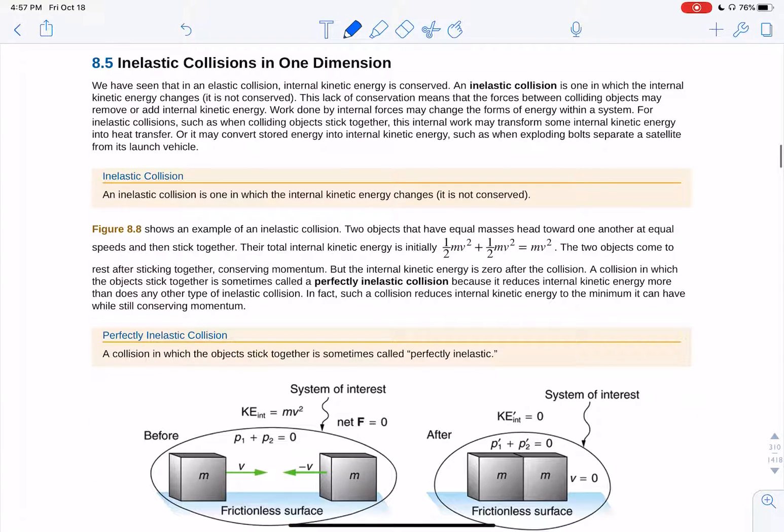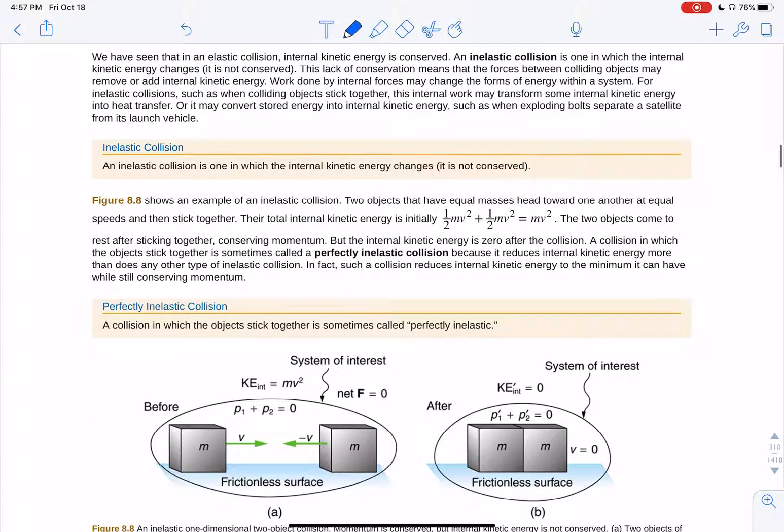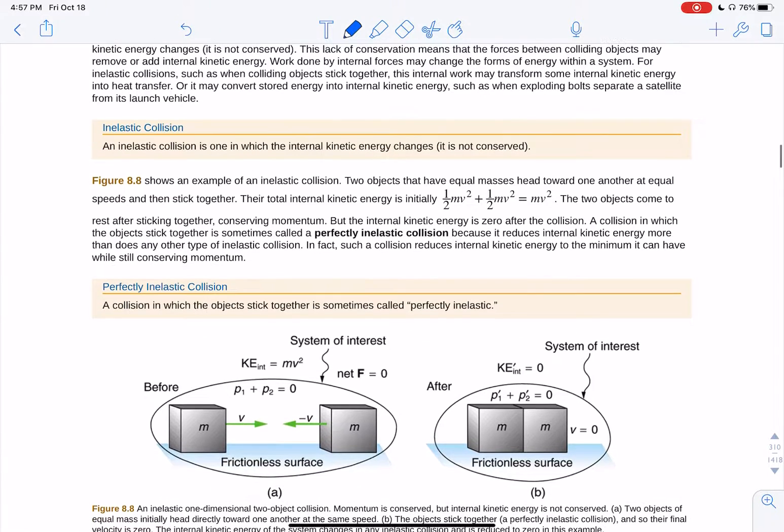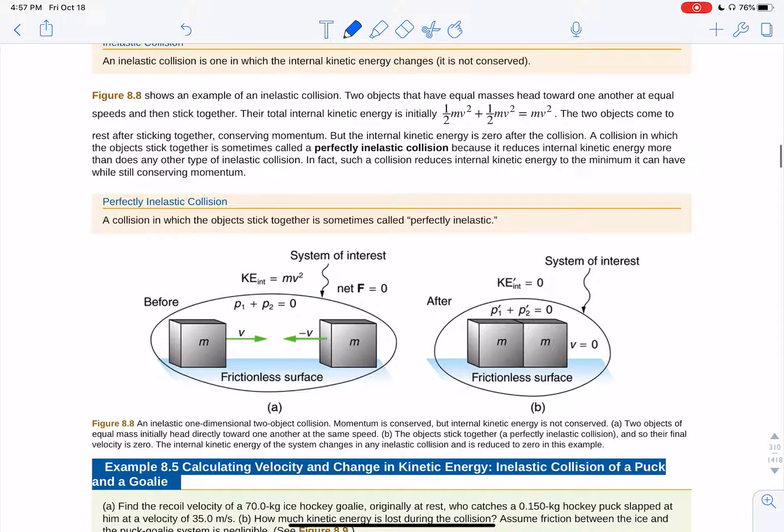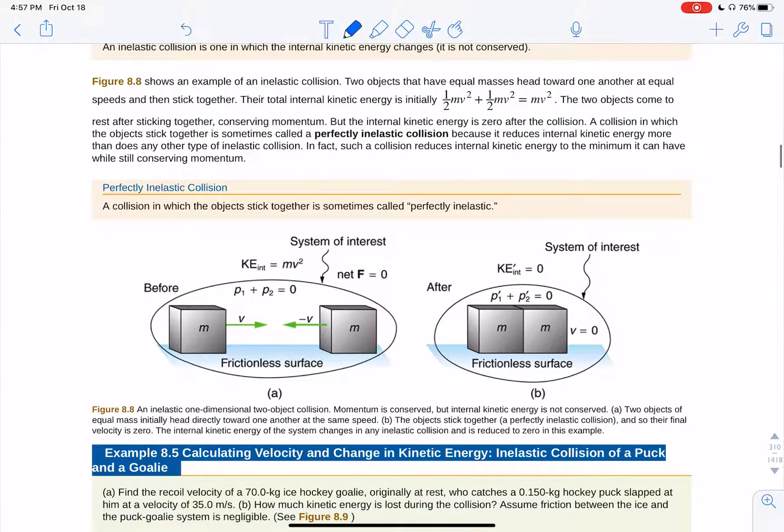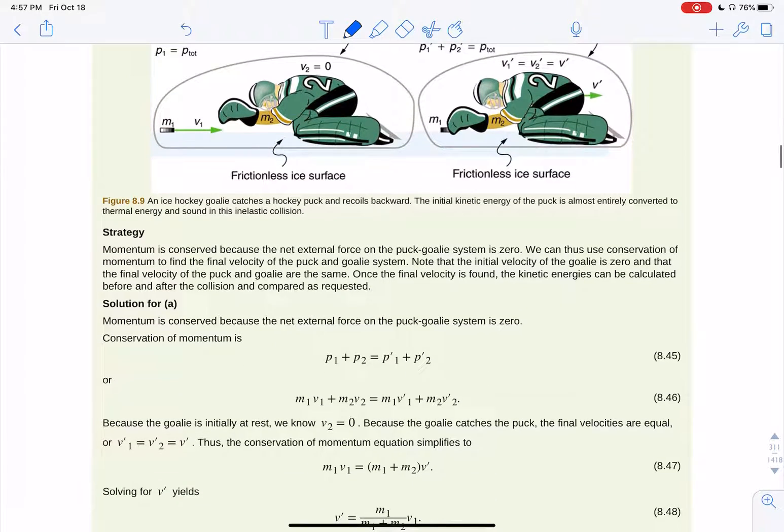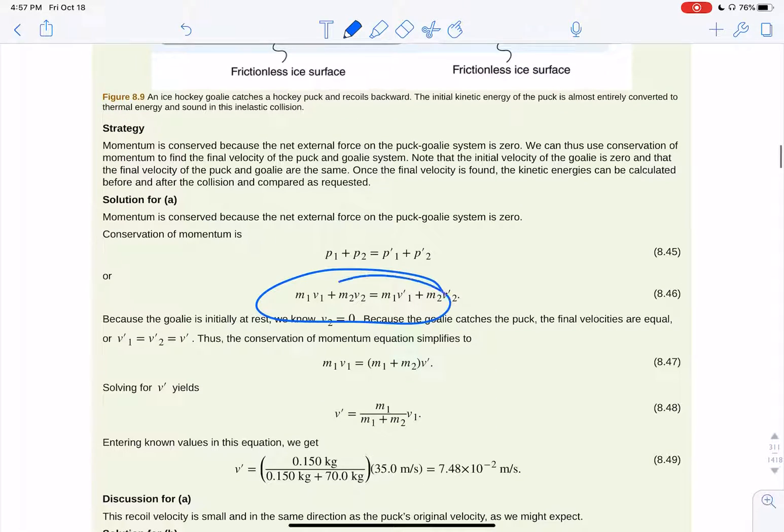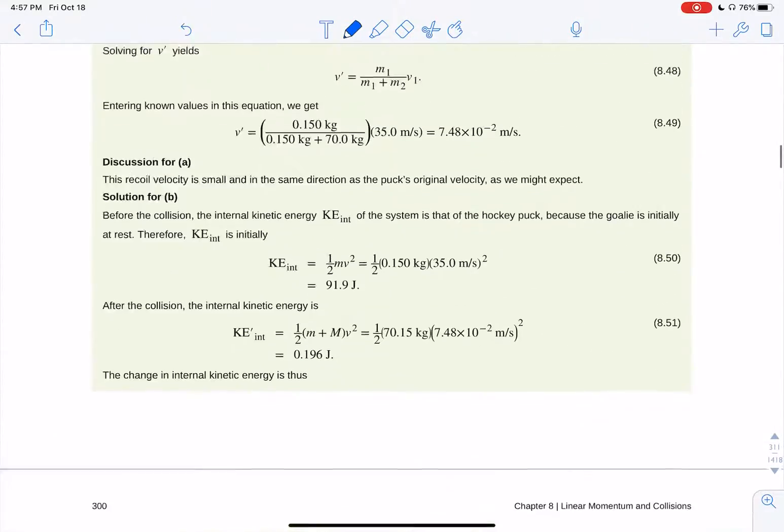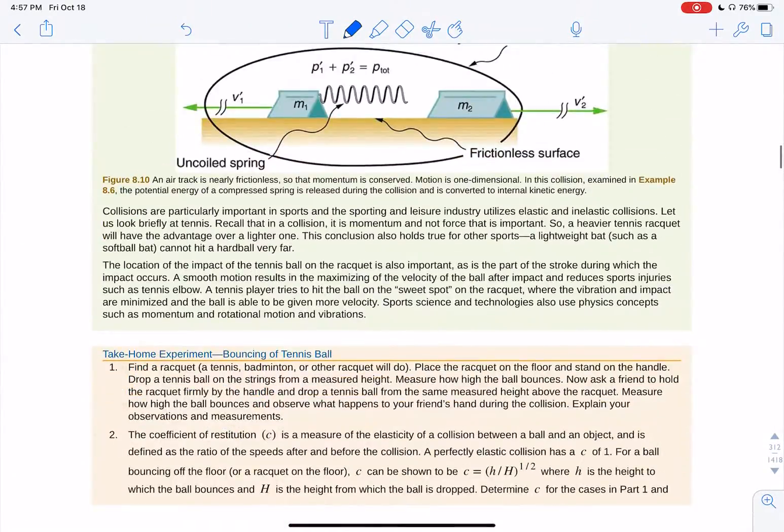Inelastic collisions, the kinetic energy is not conserved. In an inelastic collision, the objects stick together, and you have to calculate what the total energy is. Total initial kinetic energy is that. But it is not conserved, so you can only use momentum in that case. So you say M1, V1, and that's your equation for solving those types of collisions. You don't have kinetic energy being conserved.